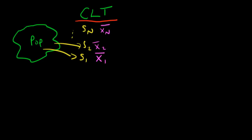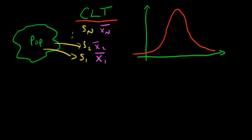If I calculate the sample mean for each of those different samples from my population, then independent of my original population distribution, the Central Limit Theorem says that our frequency distribution of our x̄ is going to be normally distributed around the true population mean mu. We have a frequency distribution which looks something like this.